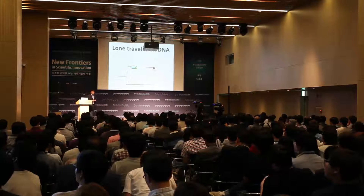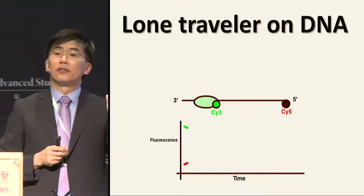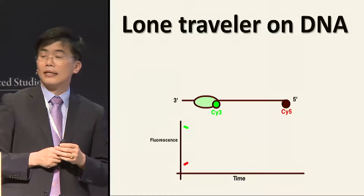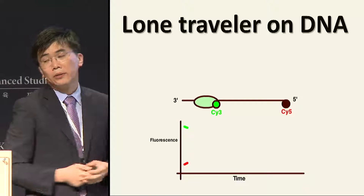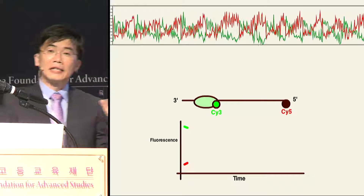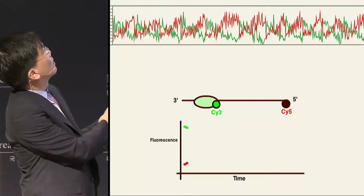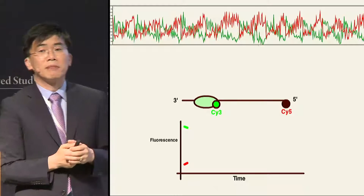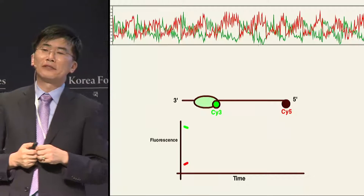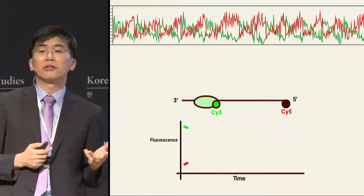You can also measure how proteins move on DNA by putting one green dye on the protein and the red dye on the DNA. As the protein approaches the end of the DNA, the green signal goes down and the red signal goes up. The surprise was that when the protein reaches the end of the track, instead of falling off, it somehow reappeared at the beginning and repeated the process many times. We spent quite a bit of effort to understand what is going on at the physical level and what this might mean biologically for the function of the molecule in the cell.